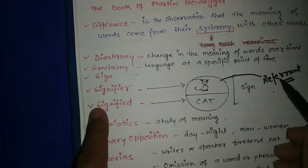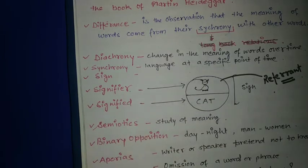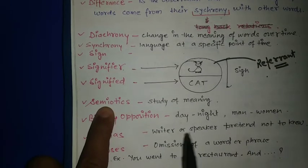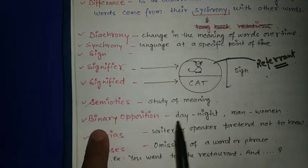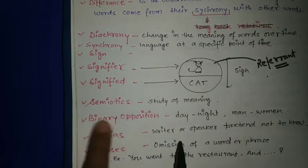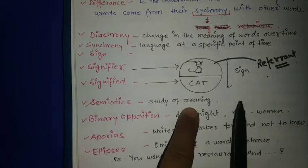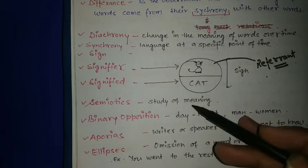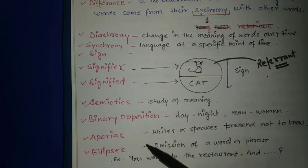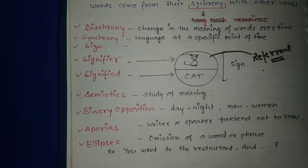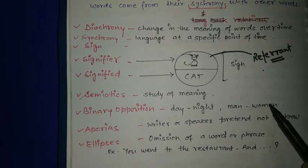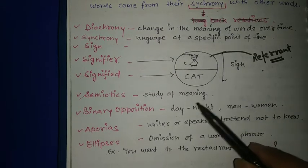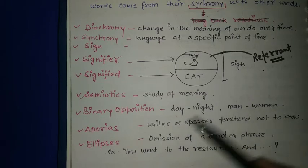Semiotics is the study of meaning. If you are studying the meaning in a language, that is called semiotics. Binary opposition refers to oppositions like day and night, men and women. In text you will see hero and heroine, hero and villain - such oppositions are called binary oppositions.